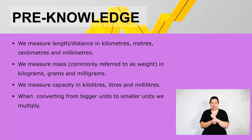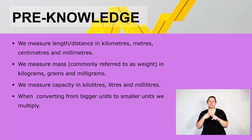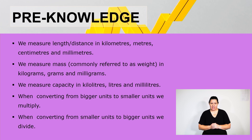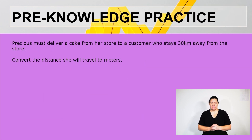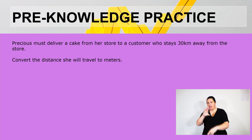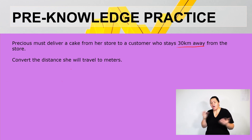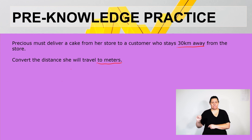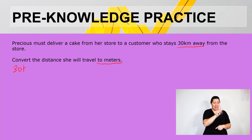When converting from bigger units to smaller units, we multiply. When we convert from smaller units to bigger units, we divide. For our practice question: Precious must deliver a cake from her store to a customer who stays 30 kilometers away. Convert the distance she will travel to meters — in other words, convert 30 kilometers to meters.